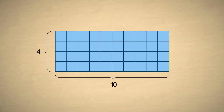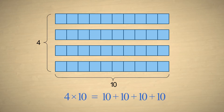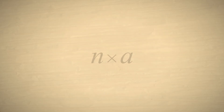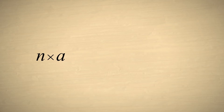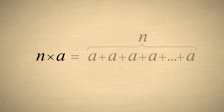We saw that multiplication is just shorthand for repeated addition. For example, multiplying four times ten is the same as adding four tens together. Let's state this in a more general way: if we let the letter n represent any integer and a represent any number, we can say that n times a is the same as adding n a's together.